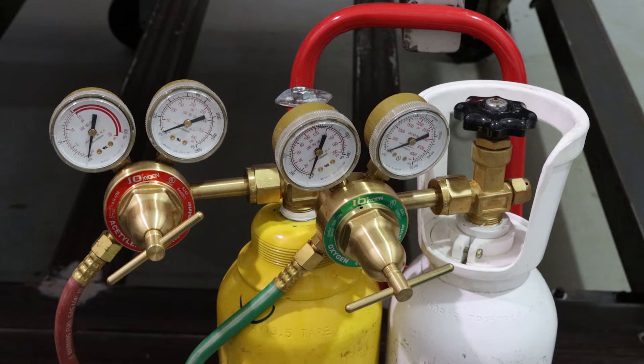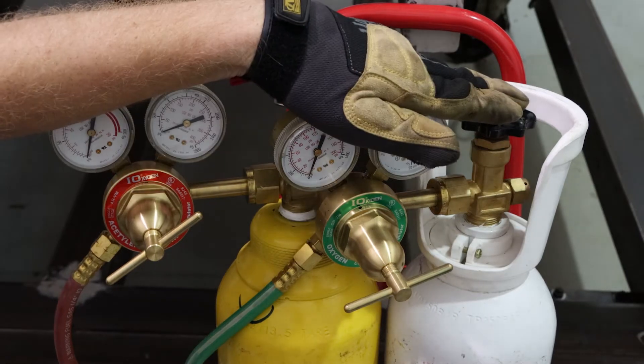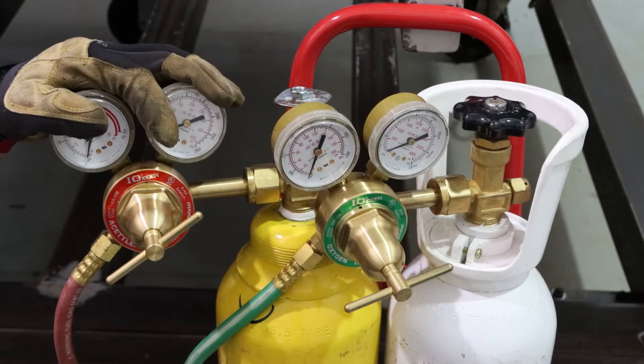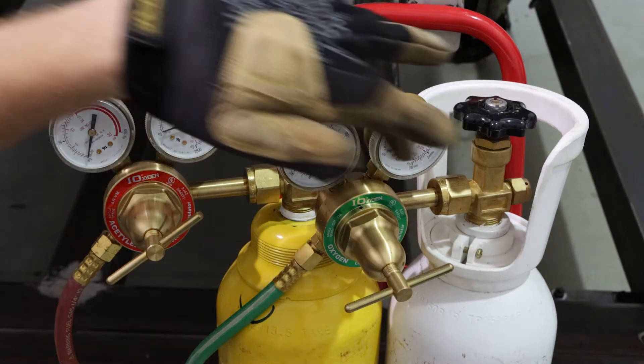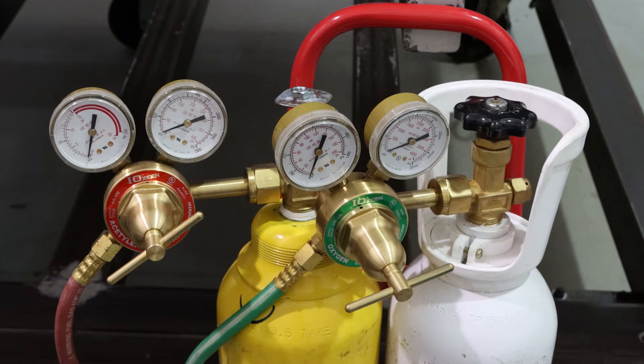Okay. So let's start on the cylinders themselves. So here we have our oxygen and our acetylene. These funny looking doodads on the top are the regulators. You can see everything is zero across the board.